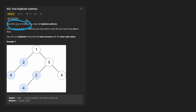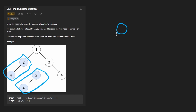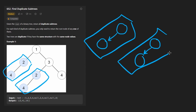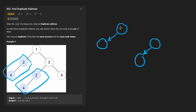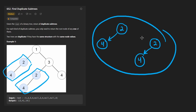We're given the root of a binary tree and we want to return every duplicate subtree. For example, we have these two that are duplicates. We know they're duplicates because they have the exact same structure — it's a node with a left child. The other subtree has the same exact structure. They both have a root of two, and then they have a left child with a value of four. They're both the exact same, so they're duplicate subtrees.